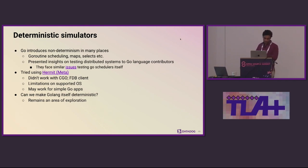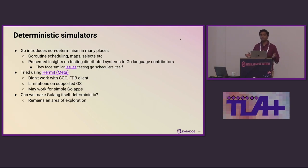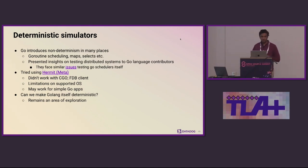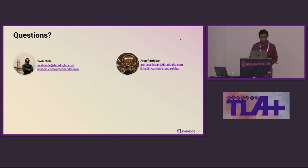What we're now thinking is perhaps there's a way to make Golang itself deterministic — like having an experimental compile flag that can run your Go application in a deterministic way. That remains an area of exploration for us and we'll share if we make any progress. If you have any questions, feel free to email me or Sash, or I can answer some right now. Thank you.